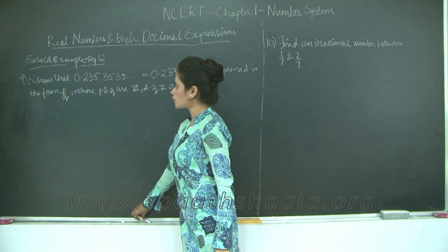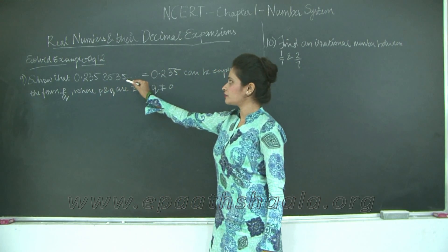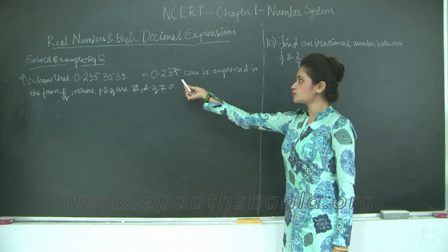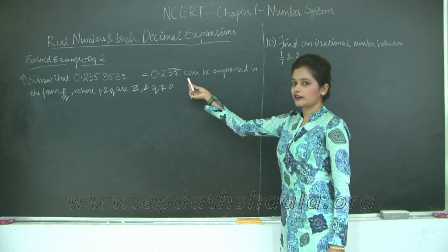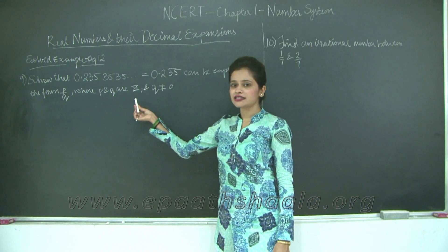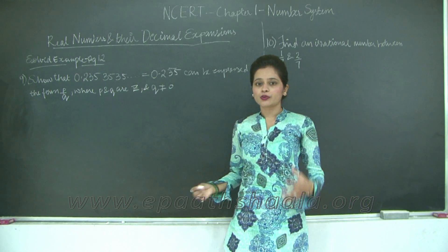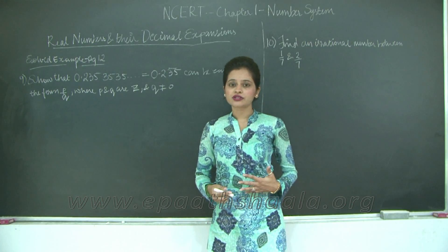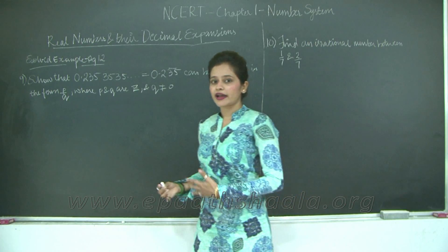We need to show that 0.235353535, which equals 0.235 bar on 35, can be expressed in the form p upon q where p and q are integers and q is not equal to 0. We are going to follow the same strategy that we used in the previous two examples. Let us go ahead and solve this out.